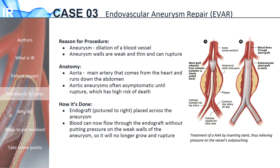Another procedure IR does is fixing aneurysms, which are outpouchings of blood vessels that occur when the walls of the vessels are weakened. The pressure inside the blood vessel pushes that weak part of the wall outward — think of it like a water balloon. The walls become thinner and weaker the more the vessel is dilated and stretched. If left untreated, an aneurysm can rupture and cause potentially fatal blood loss. One major artery that can be affected is the aorta. Aortic aneurysms are often asymptomatic, but when they rupture, the patient can die within minutes. An endovascular aneurysm repair, or EVAR, can be used to treat these aneurysms. In this procedure, an endograft is placed across the aneurysm such that blood flows through the endograft without putting pressure on the aortic wall, and the likelihood of rupture decreases drastically.